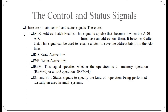There are four main control and status signals. ALE (Address Latch Enable) is a pulse that goes high when AD0–AD7 lines carry an address, then goes low; it can enable a latch to save address bits. RD (read, active low) and WR (write) are also control signals. The IOM signal specifies whether the operation is a memory operation or an input/output operation — if IOM is 0 it is a memory operation; if 1, it is an I/O operation.